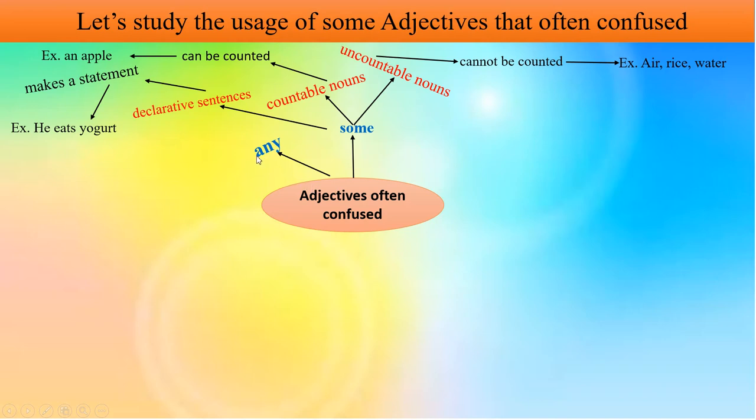Next one, any. Any is used in interrogative and negative sentences. Interrogative sentences ask a question. Negative sentences are sentences that are not true.